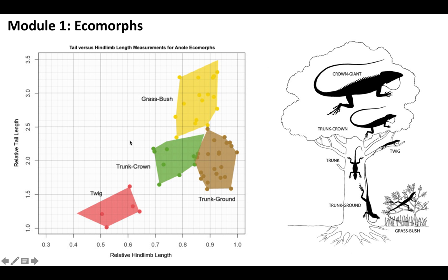This graph that we can see here is what it should look like. On the x-axis, we've got the relative hind limb length — basically the length of the back legs in relation to how big the body is. The higher the number, the longer the legs are compared to the body. The same idea goes for relative tail length on the y-axis. And we can see some pretty clear groupings of different characteristics for different ecomorphs of the lizards.